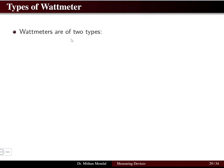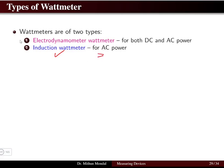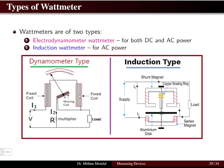Wattmeters are of two different types. One is the electrodynamometer wattmeter, which can measure both DC and AC power. The induction wattmeter, on the other hand, can be used to measure only AC power. The most commonly used type is the electrodynamometer wattmeter. The construction details of both types will be discussed more in the measurements subject; here we will cover only an overview.